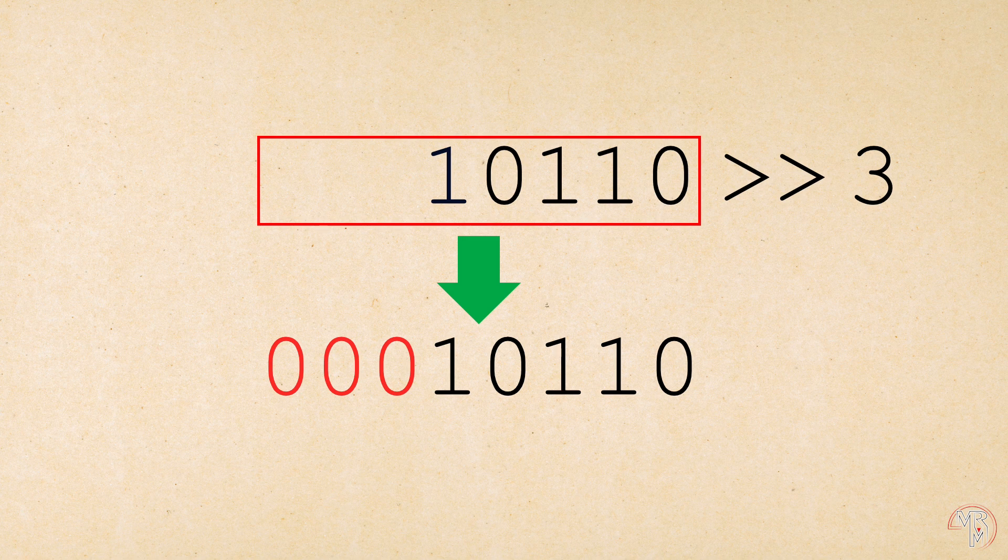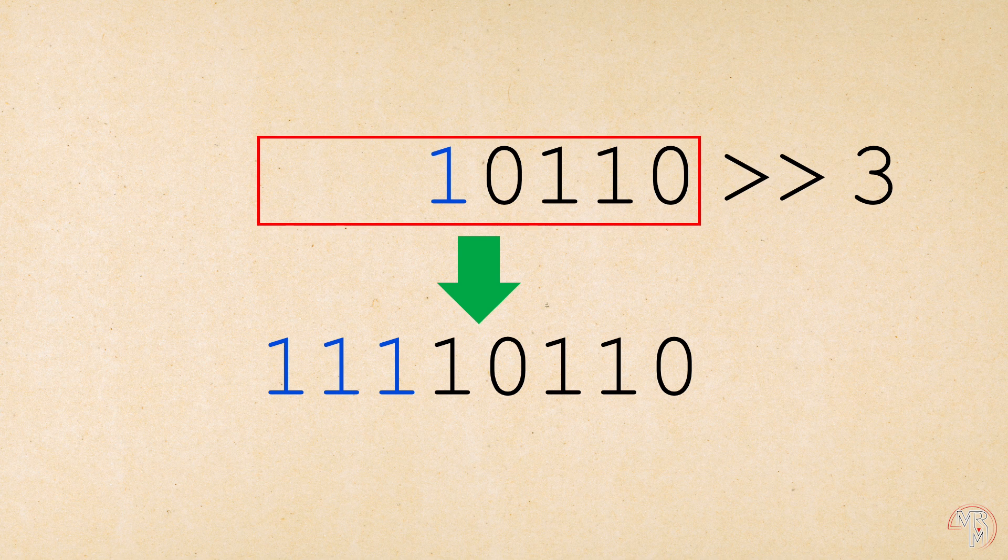However, in addition to logical right shift, there is also arithmetic right shift. The difference is that for the arithmetic right shift, instead of setting the bits on the left to zero, the leftmost bit of the original sequence is copied.